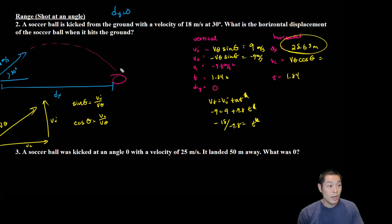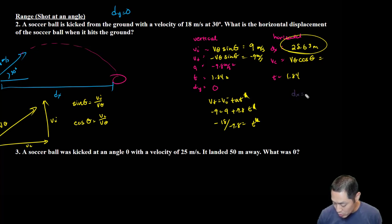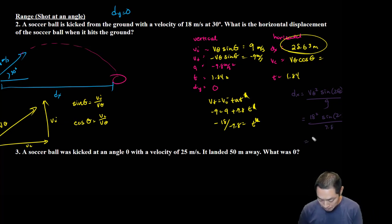Now if dy equals zero, we could just use the range equation, so you didn't have to do any of this—you could have just done this, which I'm totally fine with. dx equals v_theta squared sine of 2 theta over g. So you just plug everything in: v_theta is 18 squared, sine of 2 times 30, divided by 9.8, and you should get the same answer. 18 squared times sine of 60 divided by 9.8, and I get 28.63. So both ways work, whichever way you choose to do is totally fine with me.